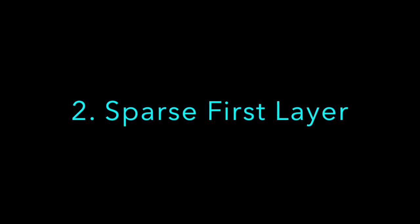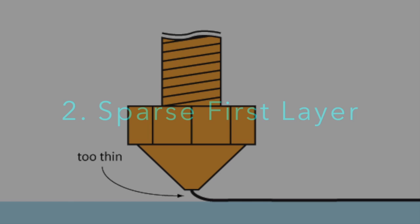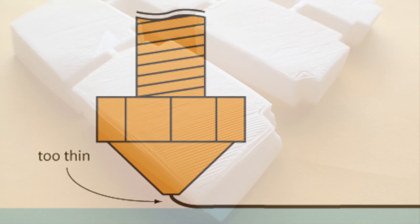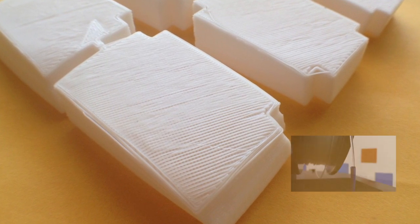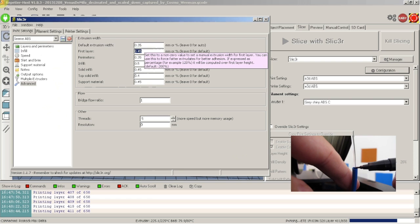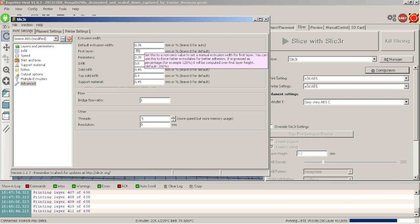Especially with smaller nozzle diameters, having a thick first layer is essential. A sparse first layer will look very similar to the nozzle being too far from the bed, like this. To fix, check your E-steps and make sure the printer isn't under extruding. Or within your slicing software, increase the filament extrusion just for the first layer.